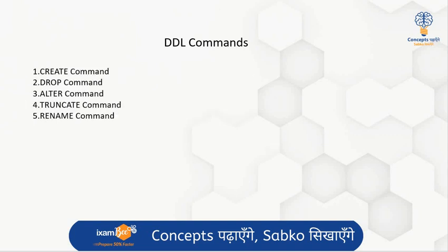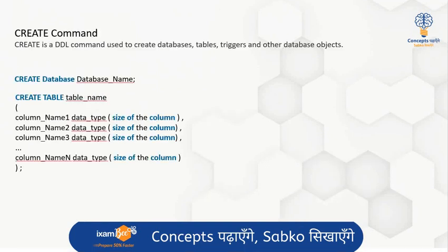Now what are the various DDL commands? The various DDL commands are: CREATE, DROP, ALTER, TRUNCATE, and RENAME. These are the five major commands of DDL which modify the data from the schema perspective as well as from the objects perspective. We are going to look at each of them one by one.